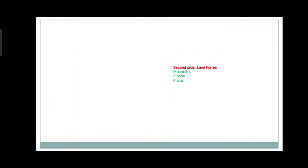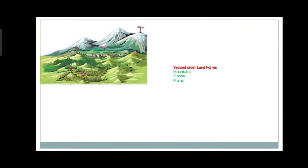The second order landforms are the main physical features like mountains, plateaus, and plains. Mountains, plateaus, and plains are categorized as the second order landforms.